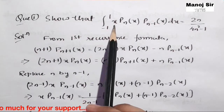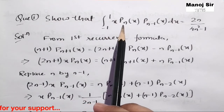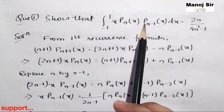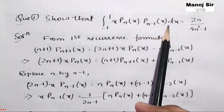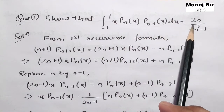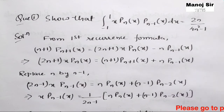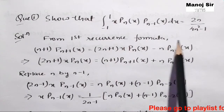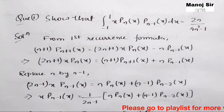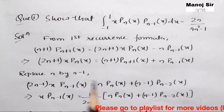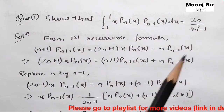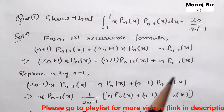Question one says: show that the integration from minus one to one of x times Pₙ(x) times Pₙ₋₁(x) dx equals 2n upon (4n² - 1). We need to prove this. We have learned a total of five reference formulas of Legendre polynomials.